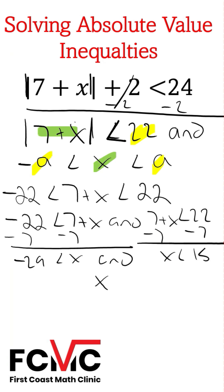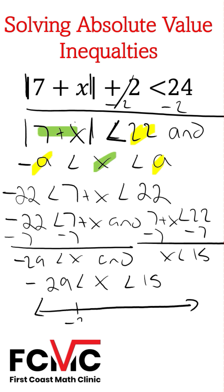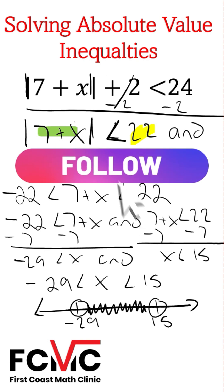We can rewrite this as one larger compound inequality: negative 29 is less than x, and x is less than 15. Now to graph this, we plot negative 29 with an open circle and 15 with an open circle. Since x is between negative 29 and 15, we shade in between them.